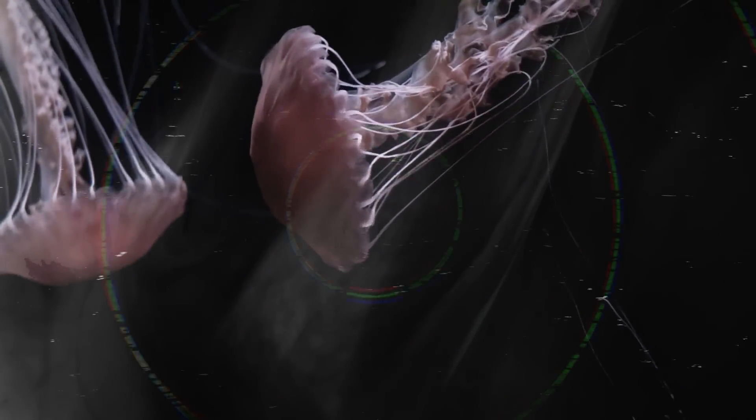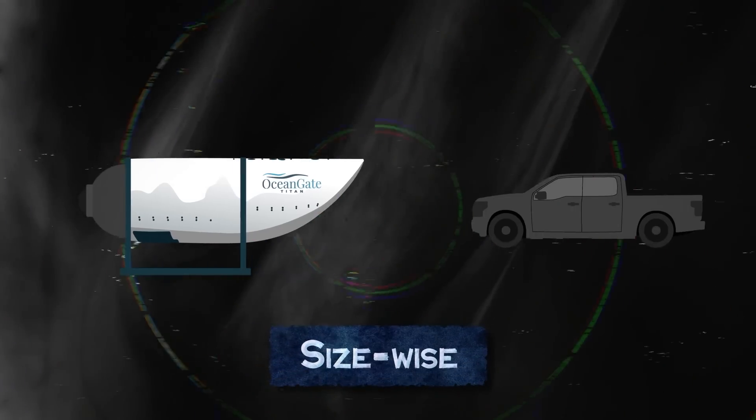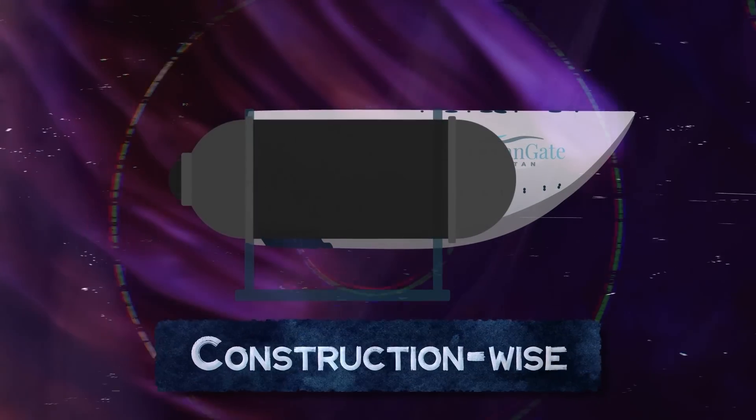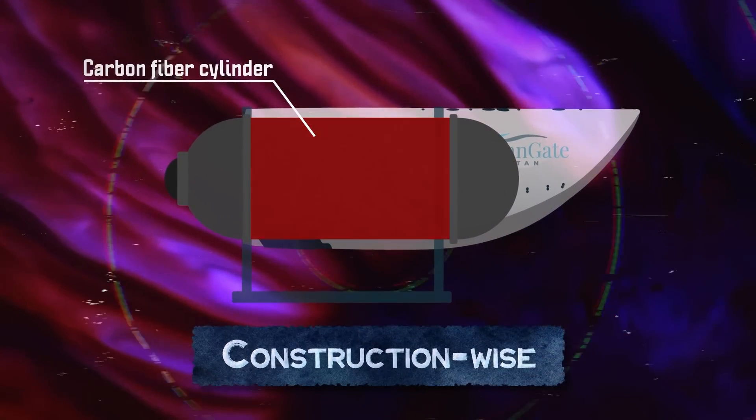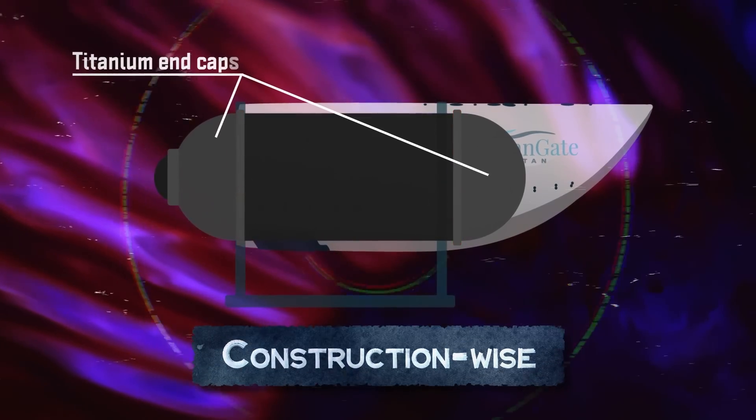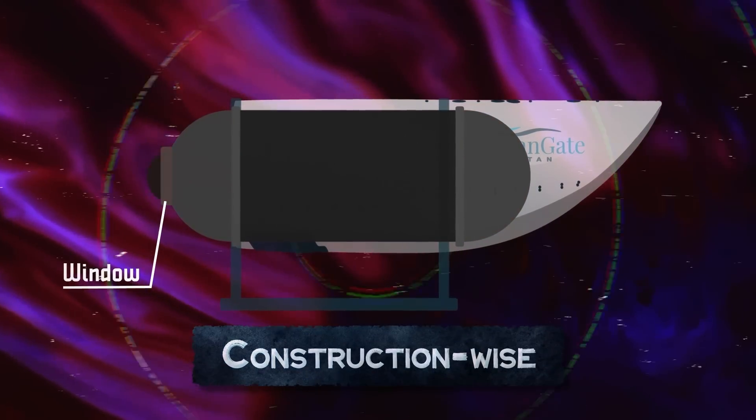First, let's take a closer look at the Titan Submersible. Size-wise, it was just a little bigger than the Ford F-150 truck. Construction-wise, its endoskeleton was made out of a carbon-fiber cylinder that forms the center section, two titanium rings holding the cylinder, and two titanium end caps, one with the window. Everything's super thick, obviously.